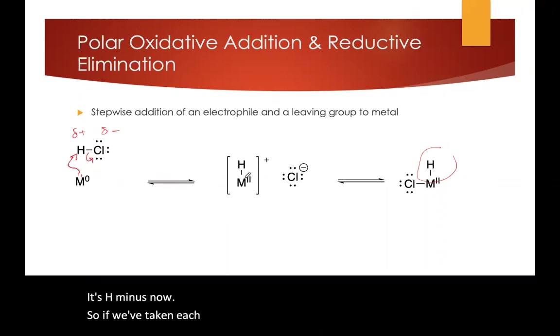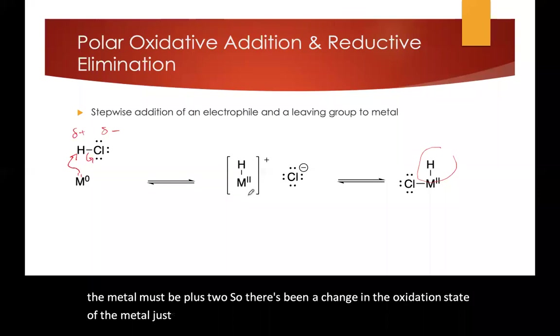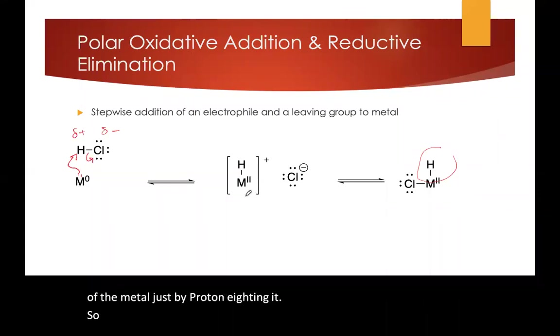So if we've taken H minus and it's bound to this metal, and there's an overall plus charge at this point, the metal must be plus two. So there's been a change in the oxidation state of the metal just by protonating it. So a protonation is an oxidative addition.